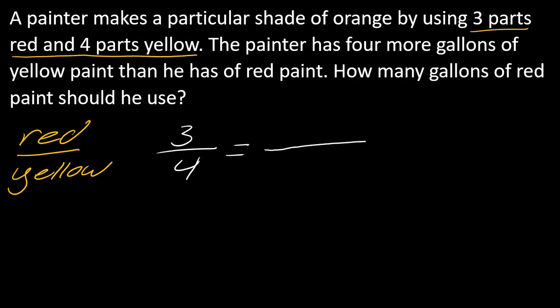I've got 3 parts red and 4 parts yellow. This is going to be a little bit different. Maybe I don't know how much red paint he has, so I can call that X. For yellow paint, he has 4 more gallons than red. This is a quantity given in terms of the red paint. So this means it's however much red paint he has plus 4 more gallons. That would be X plus 4. It's a little bit different but you still solve it the same way.